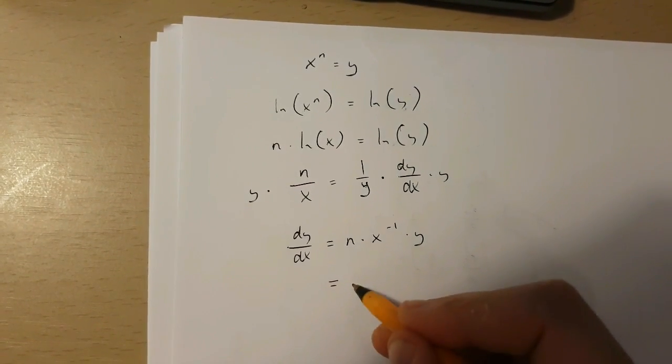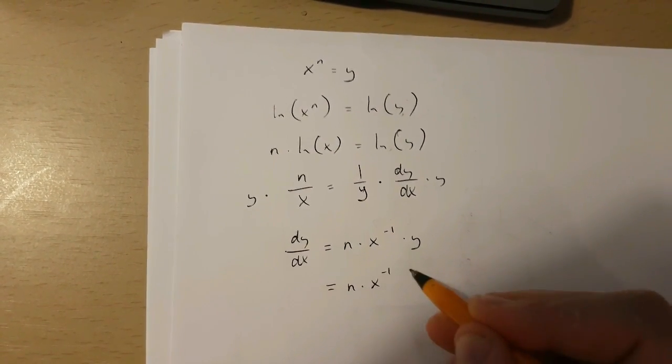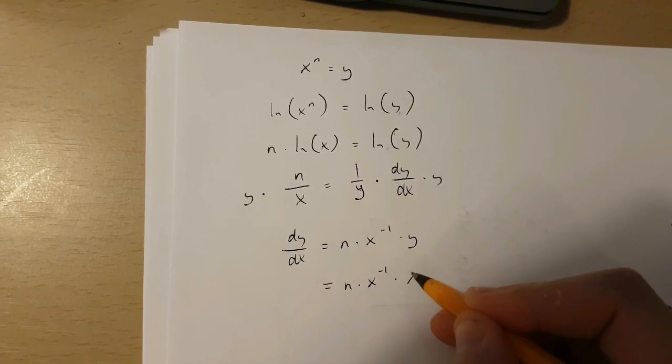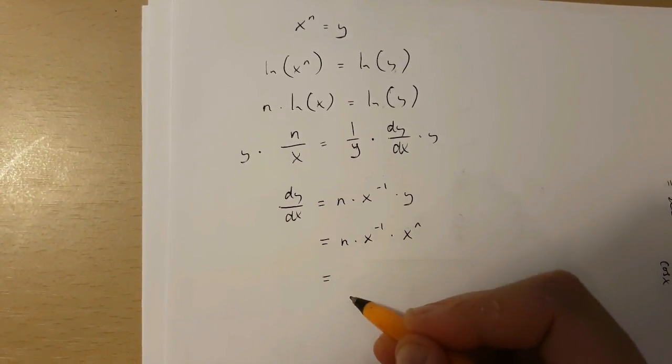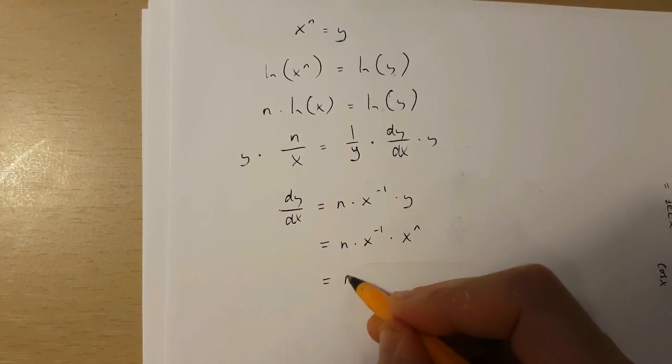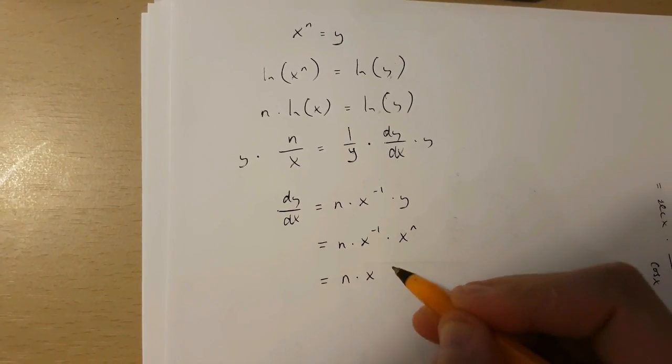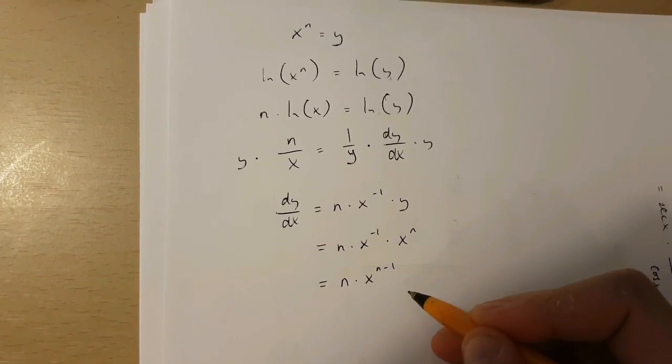So this is n times x to the power of minus 1 times x to the power of n. And this can be simplified into n times x to the power of n minus 1.